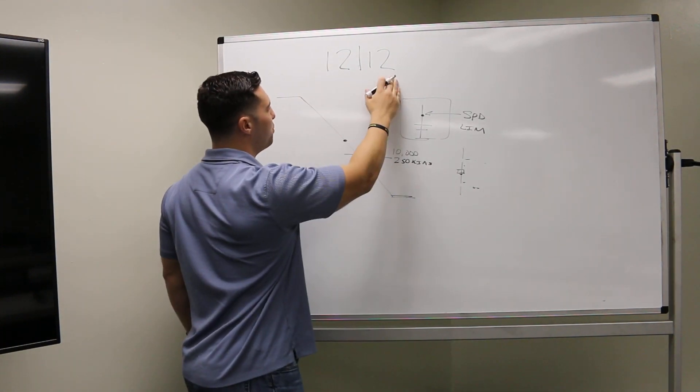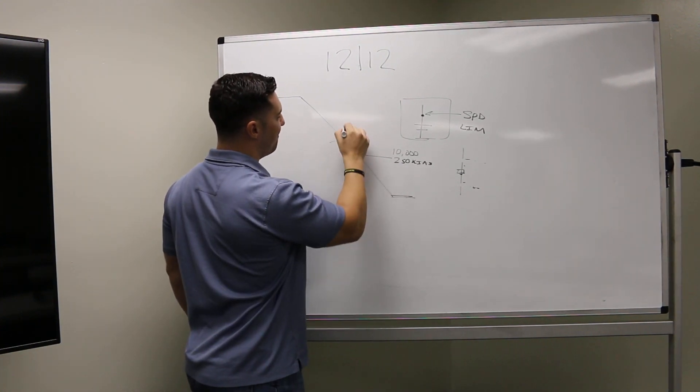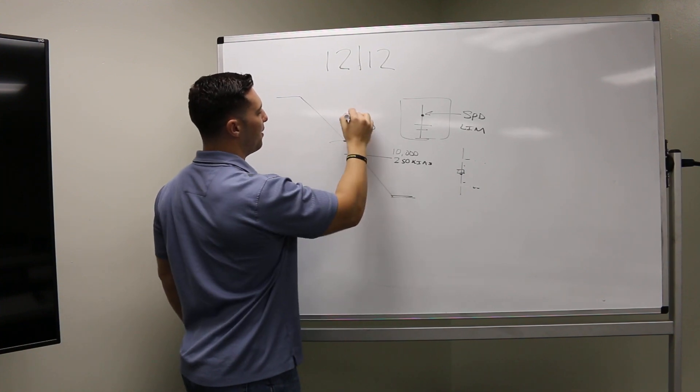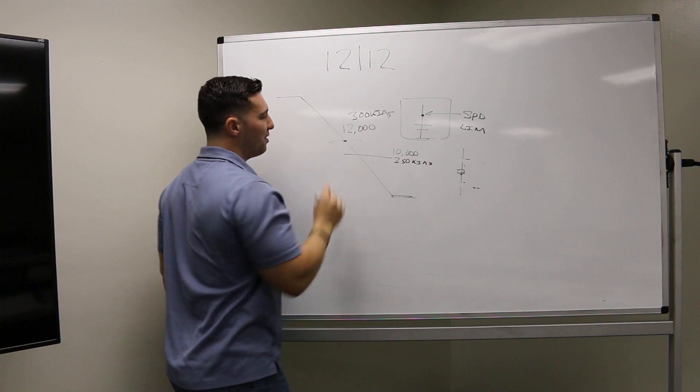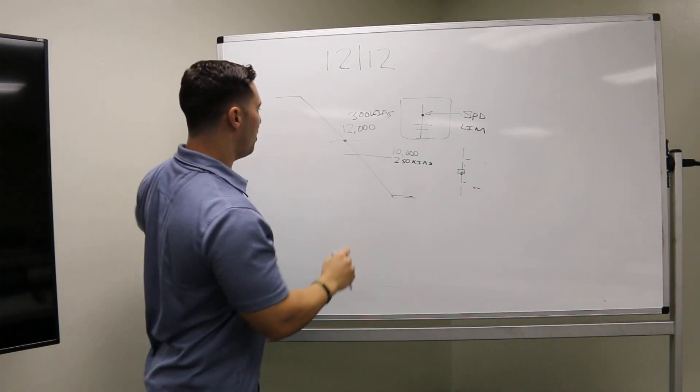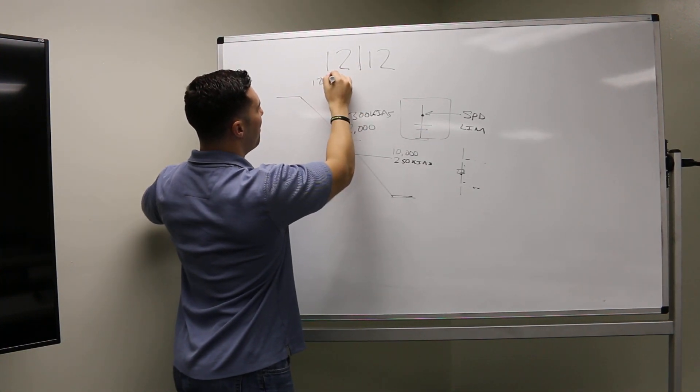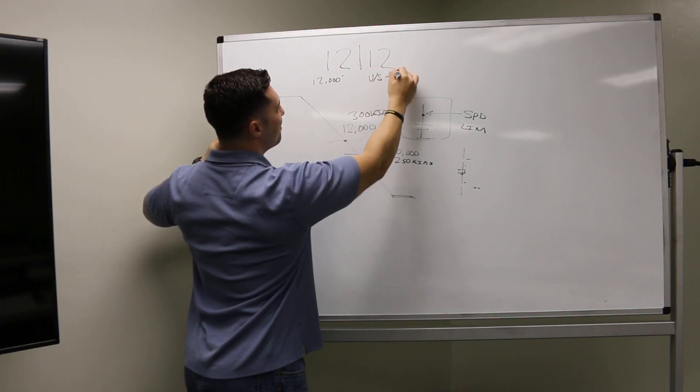So 12 and 12, as my buddy taught me, basically when we're at 12,000 feet, and we're descending somewhere around 300 knots, what we're going to do is we're going to dial in vertical speed minus 1200. So the first 12 is altitude at 12,000 feet, we're going to dial in vertical speed minus 1200.